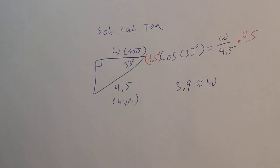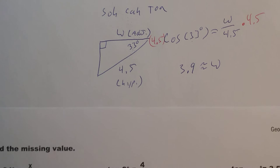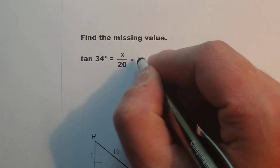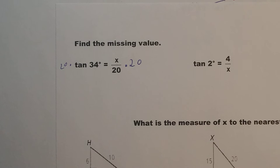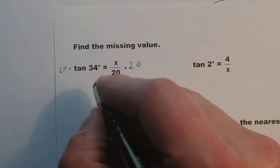Let's go over a couple of practice ones. For the first one, if I have x over 20, I'm going to multiply both sides by 20 — you can use a scientific calculator. So I get 20 times the tangent of 34, and that's about 13.5, which equals x.